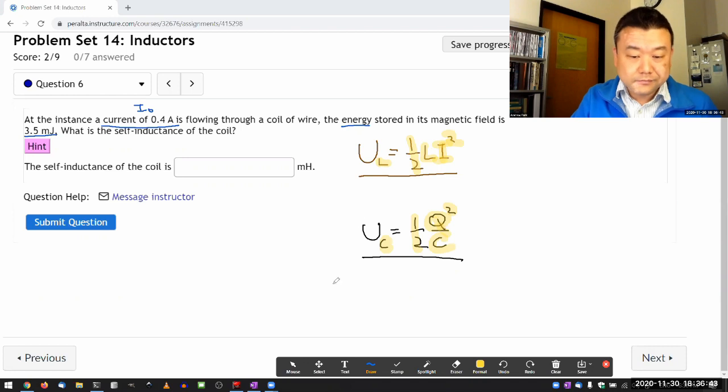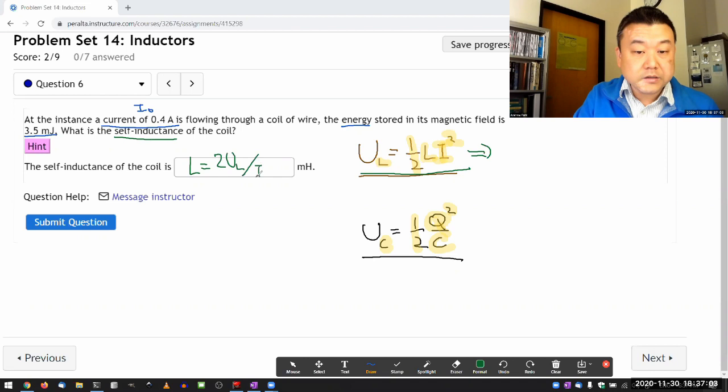But I want you to note the similarity because that'll help you remember the expressions. But at the kind of fundamental level, it's relatively simple question where you solve this expression for the quantity you are being asked for, the inductance. So solve it for L, L is equal to 2 times the energy stored divided by I squared.